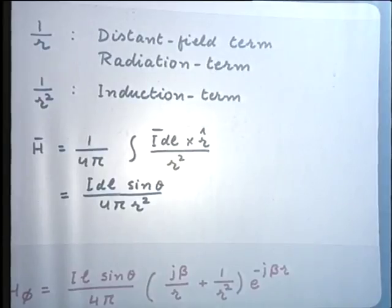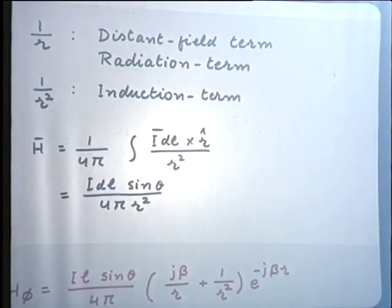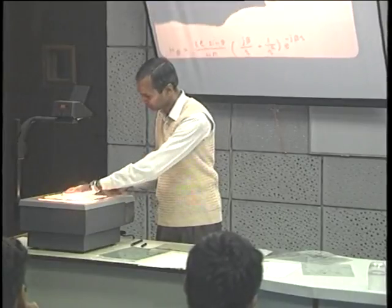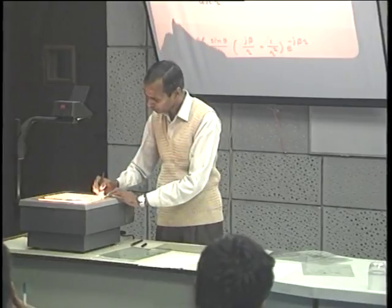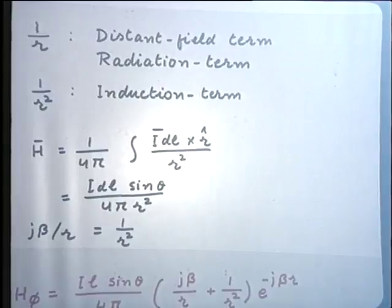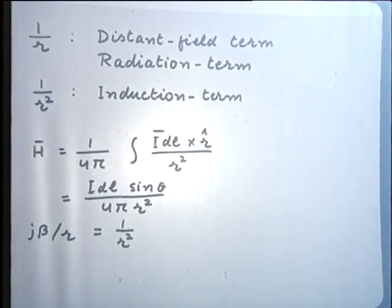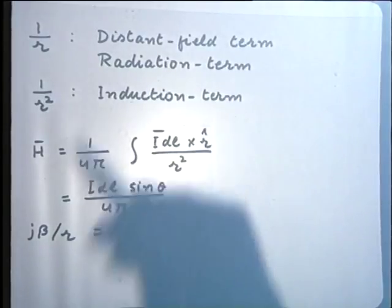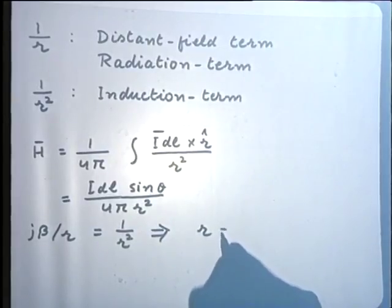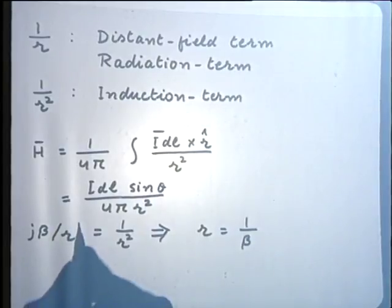There is a certain distance where the two terms become equal, beyond which the far field term dominates. Setting the magnitudes of jβ/r and 1/r² equal gives R = 1/β as the break-even distance.